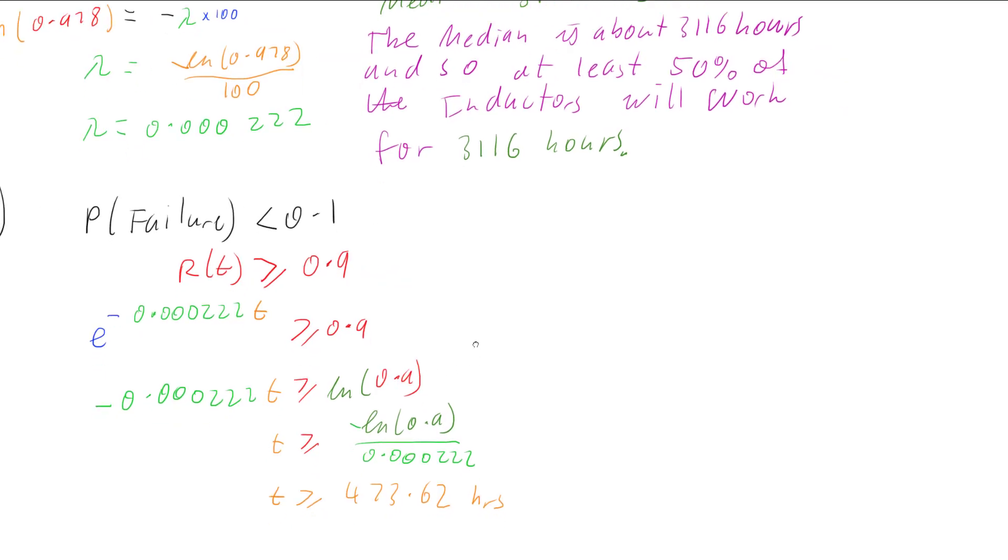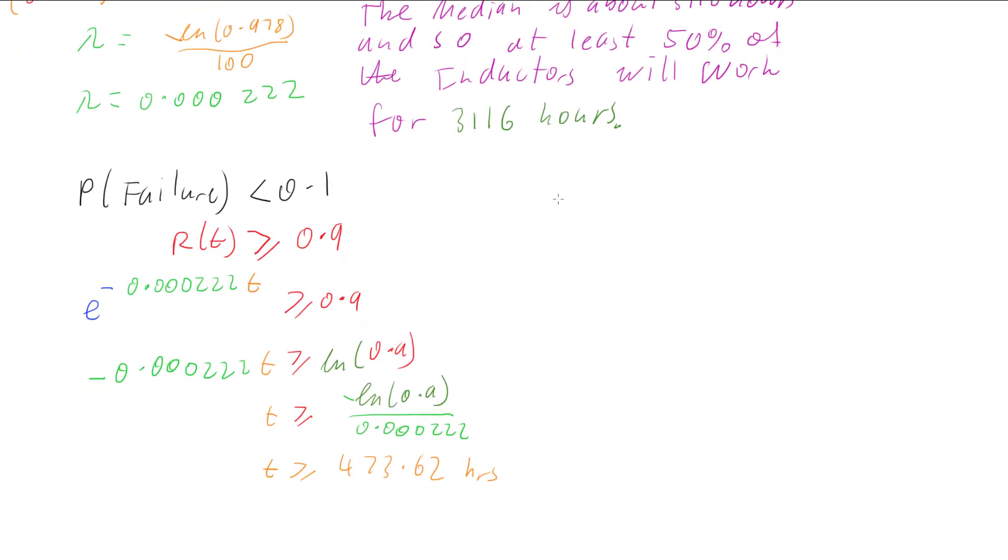And so what this means is that the probability of failure is less than 10% for a period of less than 474 hours. So because our probability of it lasting, of being reliable, was more than 0.9, the probability of failure is less than 10%, which means that it will last for less than 474 hours.